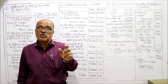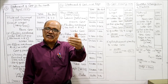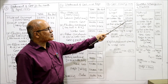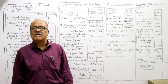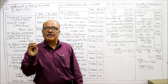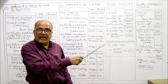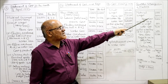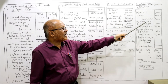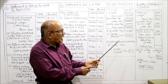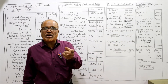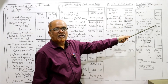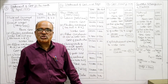Percentage of establishment and general expenses on works cost: 60,000 ÷ 12,00,000 × 100 = 5%. So admin expenses are 5% of works cost. Now applying these percentages to the quotation: material 6,000 + wages 3,000 = prime cost 9,000. Works overhead = 20% on wages = 3,000 × 20% = 600. Works cost = 9,600.